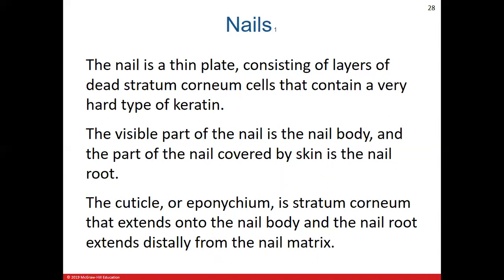Another accessory structure of the integumentary system is the nails, covering both the fingernails and toenails. Nails are basically a thin layer of dead stratum corneum cells with a large amount of the keratin protein. There's quite a bit of terminology here. The nail body is the visible part on the surface, but nails also extend below the skin — that part is called the nail root. The cuticle region, also referred to as the eponychium, is part of the stratum corneum layer that extends onto the nail body and nail root.